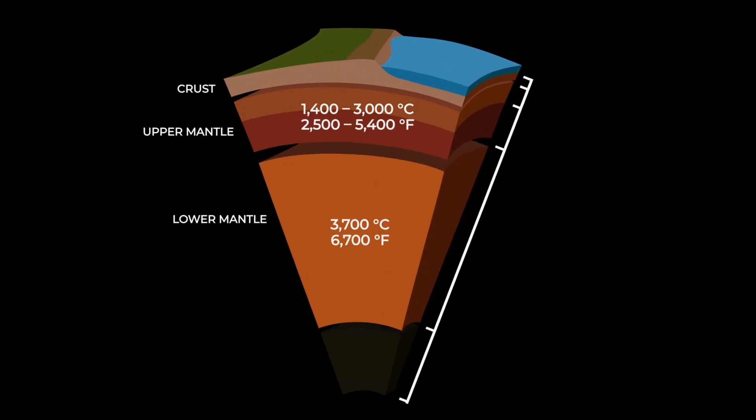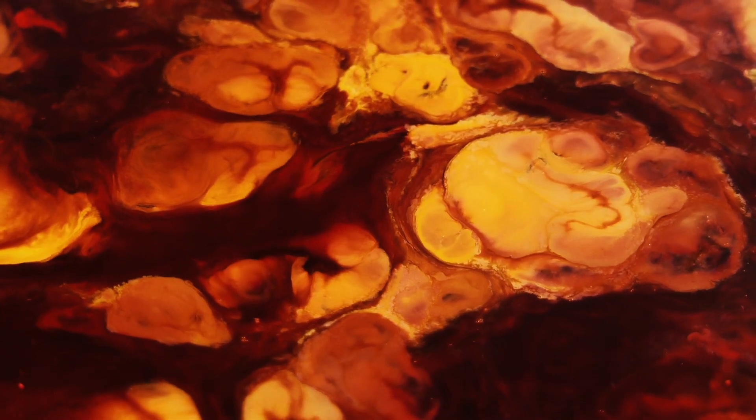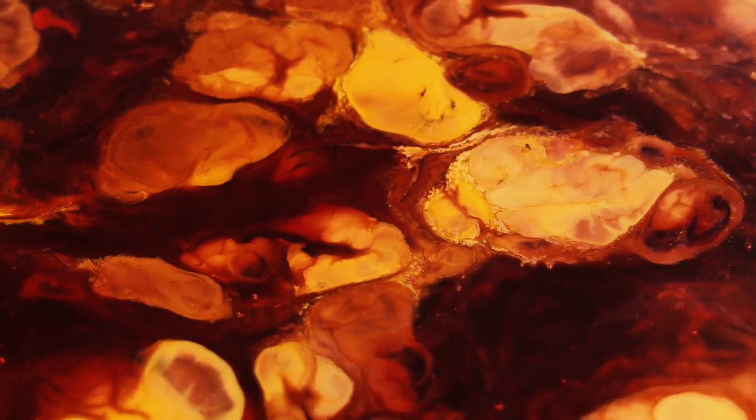Traveling past the mantle, we reach the outer core of the Earth. This layer is liquid, and because it is made mostly of a combination of the metals iron and nickel, it generates a magnetic field that surrounds the Earth.